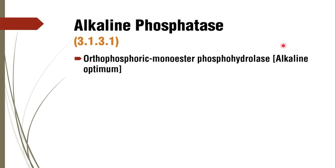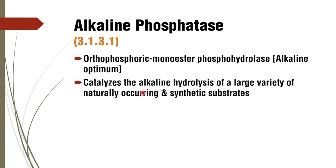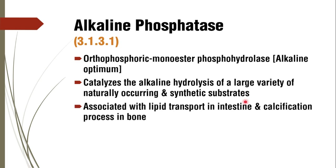There is another enzyme — acid phosphatase — which has an acidic pH optimum. Alkaline phosphatase catalyzes alkaline hydrolysis of a large variety of naturally occurring and synthetic substrates, so it has a wide variety of action in various tissues. Its isoenzyme studies can give us a better clue in the diagnosis of various disorders. It is mainly associated with lipid transport in the intestine and the calcification process in bone — that is, osteoblastic activity.